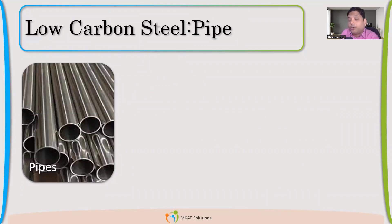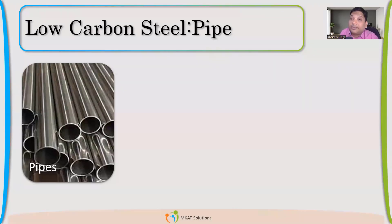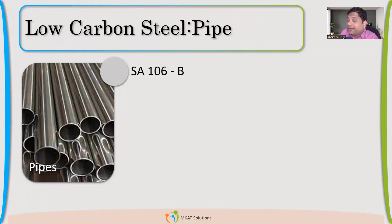Now let's talk about pipe, since plate has been covered. You have different grades and now know how to select them. For nozzles on a vessel — for example, if your vessel is vertical and supported on legs, the legs may also use pipe — nozzles and structural pipe come into play.